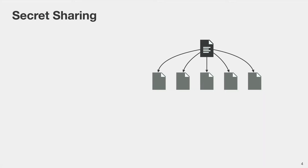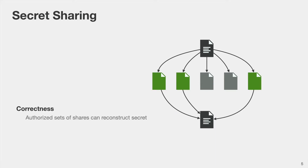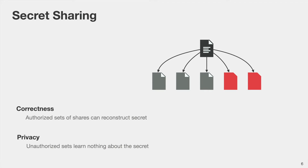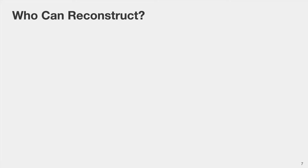In a secret sharing scheme, we're given a bit string — here represented as a little file — and we would like to split this bit string into something that we call shares in a manner that allows us to pool together certain subsets of the shares and reconstruct the original secret, but at the same time guarantee that certain other unauthorized subsets learn no information about the secret whatsoever. To specify which shares can reconstruct and which cannot, we define an access structure, which is simply the collection of all subsets of shares that are authorized to reconstruct.